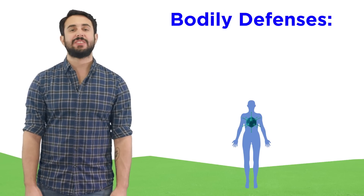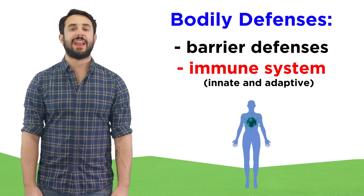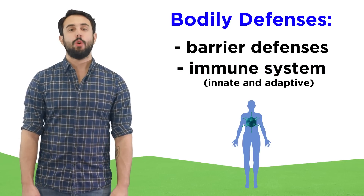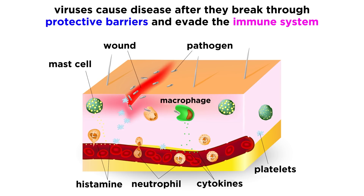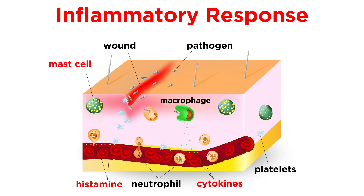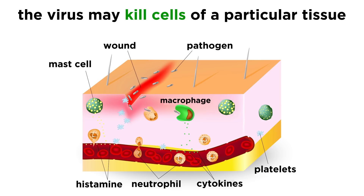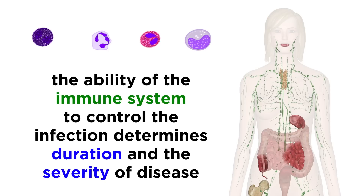When a host cell and a virus encounter each other, our body's barrier defenses and immune systems — both innate and adaptive — work to prevent or control infection of the organism as a whole. Viruses cause disease after they break through the natural protective barriers of the body and evade the immune system. From there, the virus might trigger a destructive immune and inflammatory response, or it might kill cells of an important tissue, like the brain. Ultimately, the ability of the immune system to control the infection determines both the duration and severity of the disease.